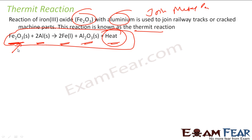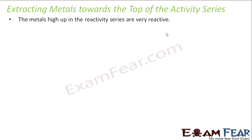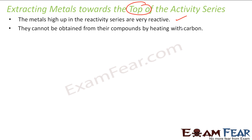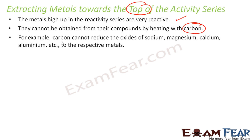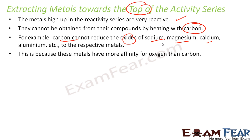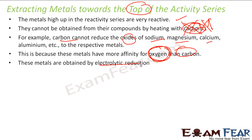This reaction is called the thermite reaction — a very common reaction to join metal parts. In this case, these metals are very reactive, at the top of the activity series. They cannot be obtained by heating with carbon, because carbon will not be able to reduce the oxides of sodium, magnesium, or calcium. These metals have more affinity towards oxygen than carbon. That is why we cannot use carbon for these metals. That is why we use electrolytic reduction.